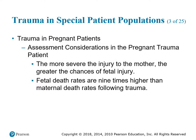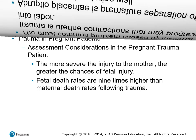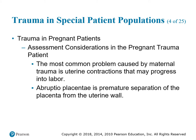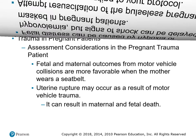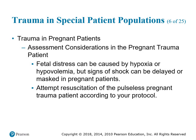The more severe the injury to the mother, the greater the chances of fetal injury. Fetal death rates are nine times higher than maternal death rates following trauma. The most common problem caused by maternal trauma is uterine contractions that may progress into labor. Abruptio placenta — premature separation of the placenta from the uterine wall — also occurs. Uterine rupture may occur from motor vehicle trauma and can result in maternal and fetal death. Signs of shock can be delayed or masked in pregnant patients. Attempt resuscitation of the pulseless pregnant trauma patient according to your protocols.